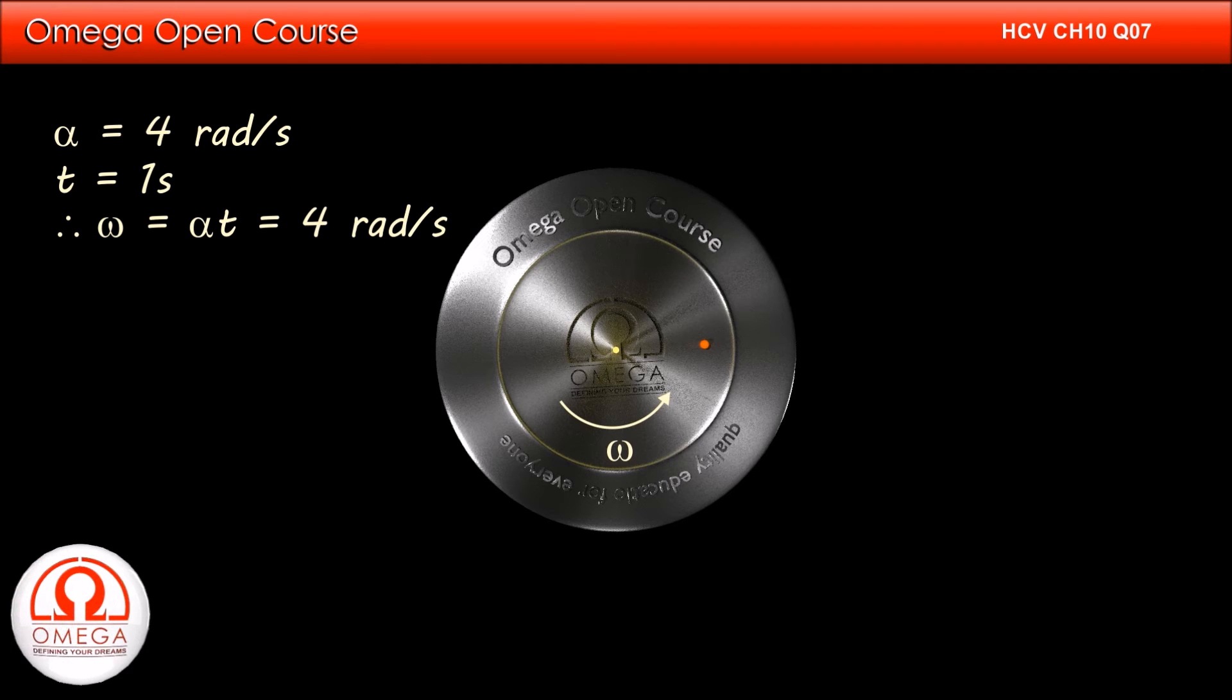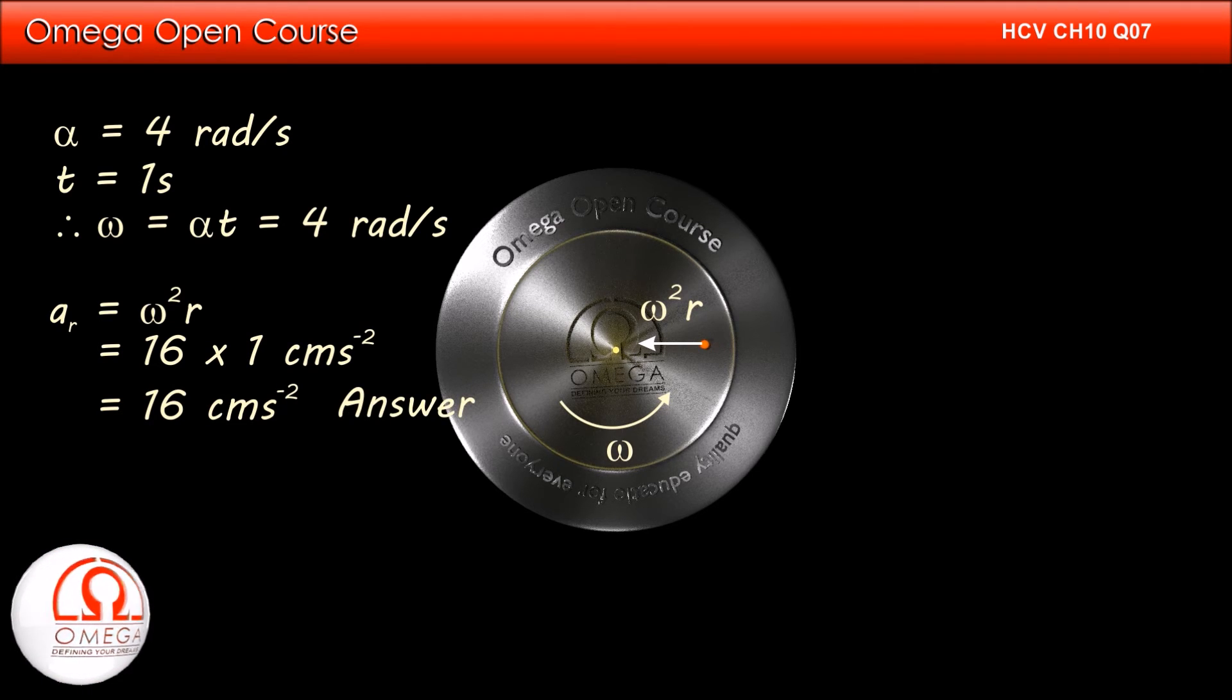From circular motion, we know that for a body on a circular path of radius r at angular speed ω, its radial acceleration is given by ω²r. Putting the values, we get 16 × 1 or 16 cm per second square. This is the answer to the first part of the question.